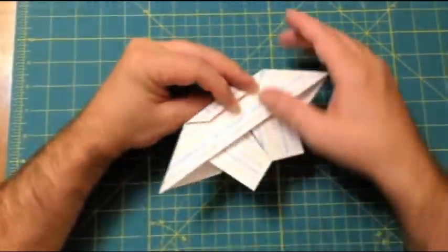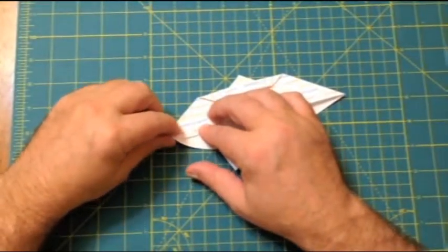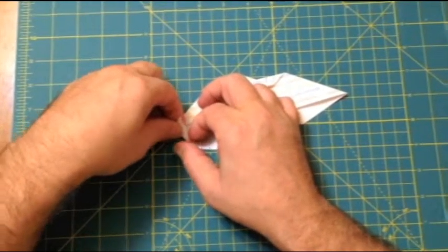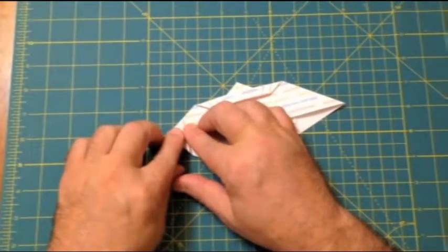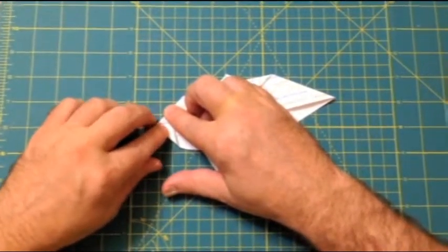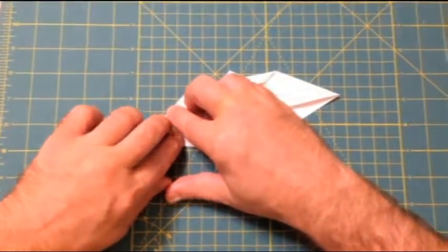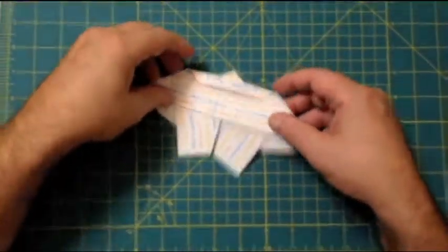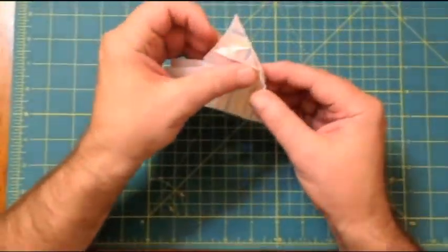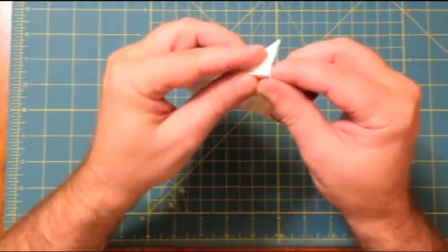Now, we come to the other side and we're going to shorten the wings up a little bit. We're going to fold this over. About like that. And we'll do the same thing on the other side. And to help it match, we'll fold it like this and bend it over.